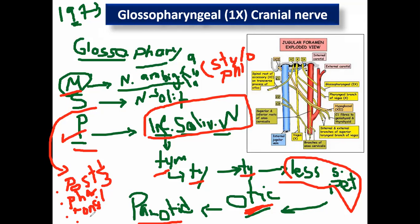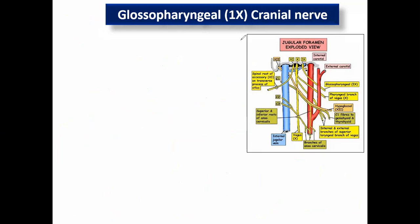The glossopharyngeal also supplies what is called the carotid sinus. Here in the carotid you find a dilatation containing the carotid sinus, which is very important in chemoreceptor and baroreceptor control of blood pressure. This is a reflex. This is, in brief, the glossopharyngeal nerve.